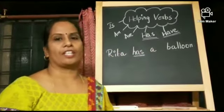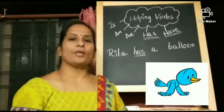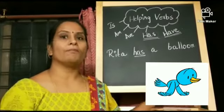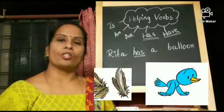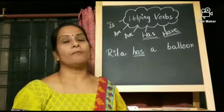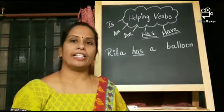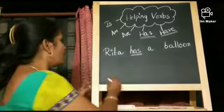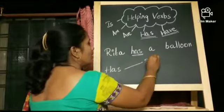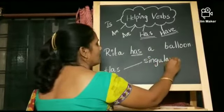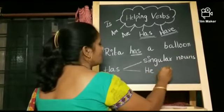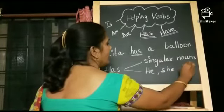Let's see few more examples children. The bird has two wings. Here we use has because the wings belongs to the bird. It has feathers also. We use has for singular nouns and singular pronouns. Singular pronouns are nothing but he, she, and it.